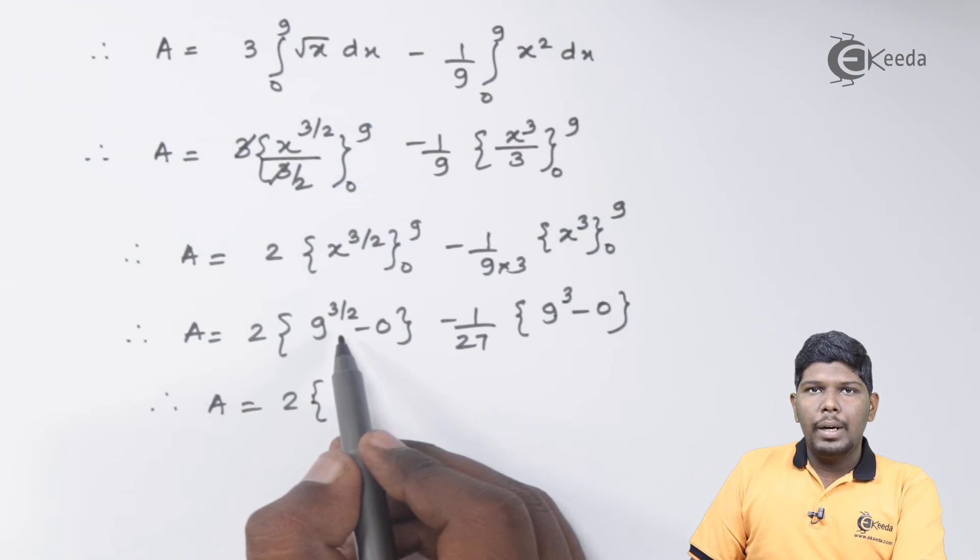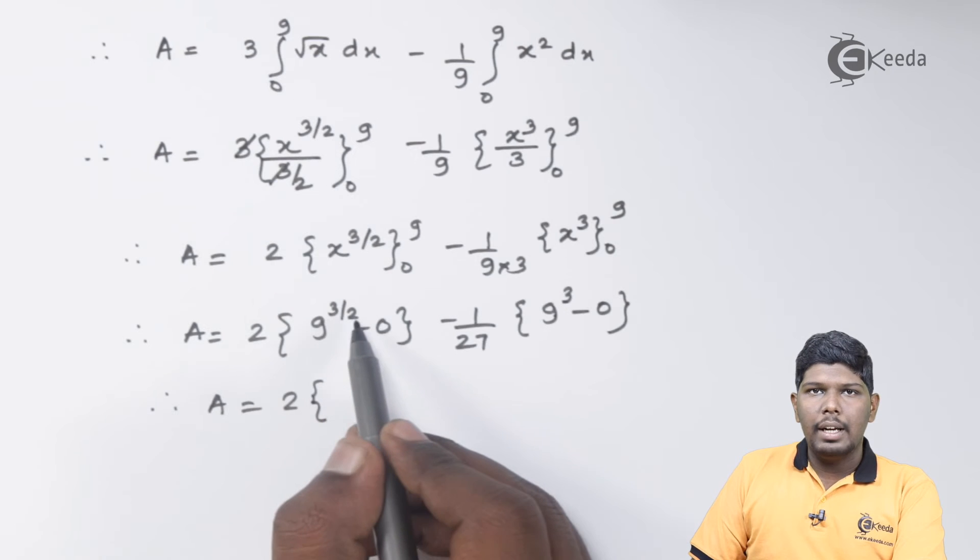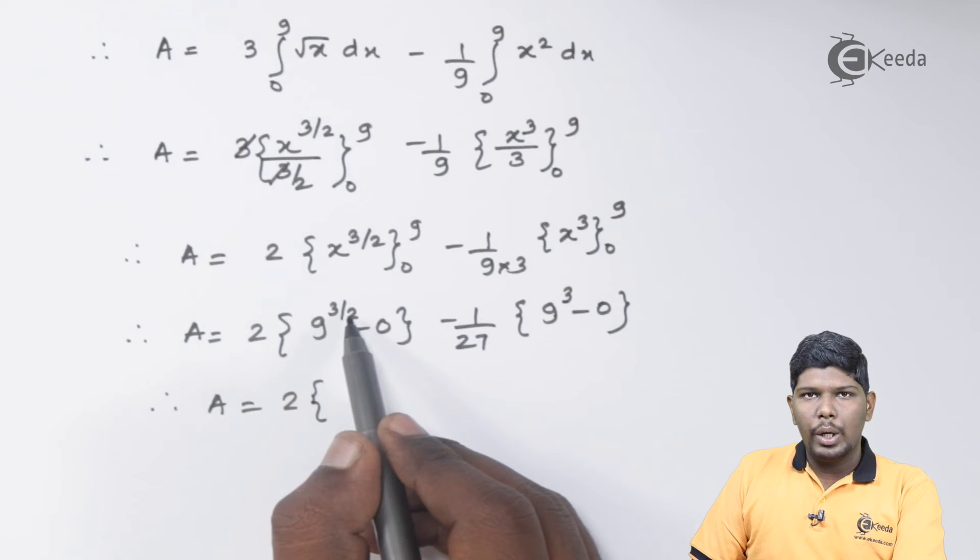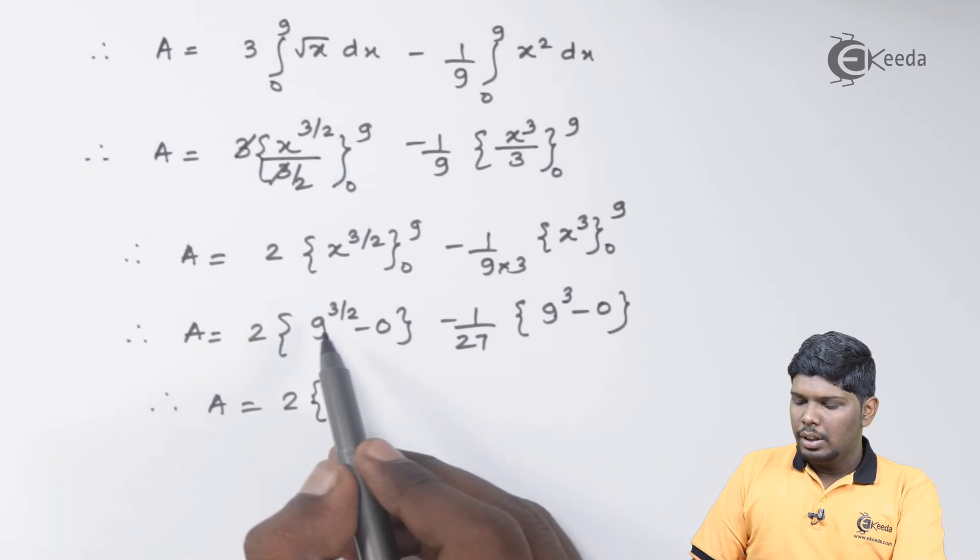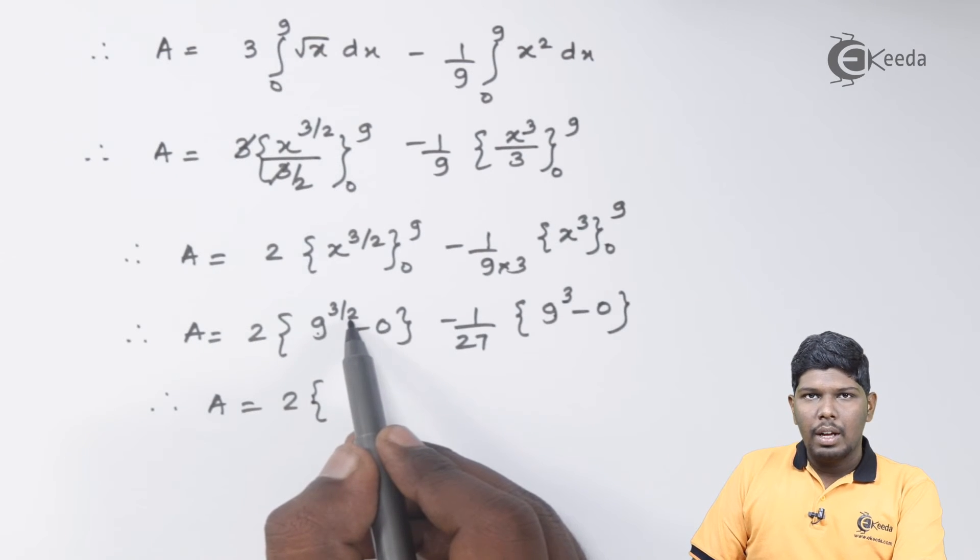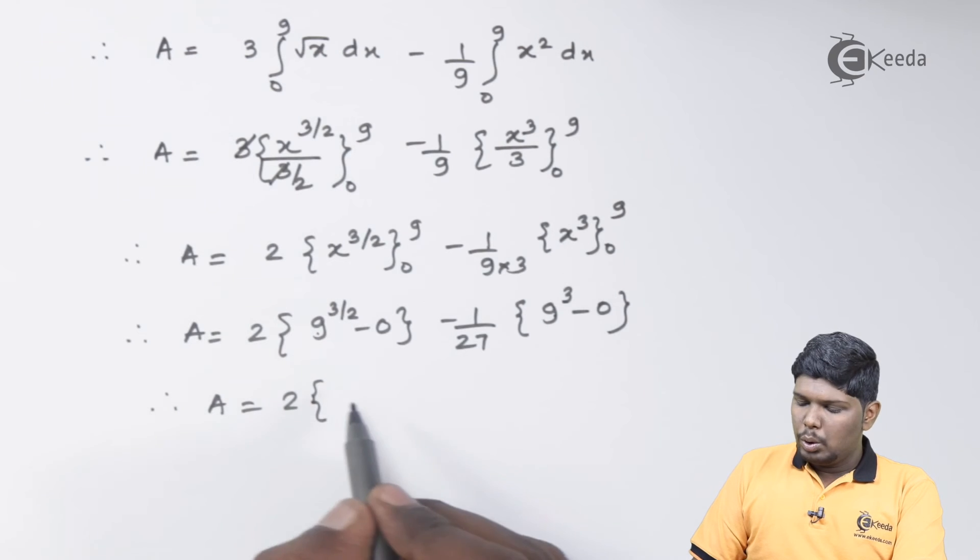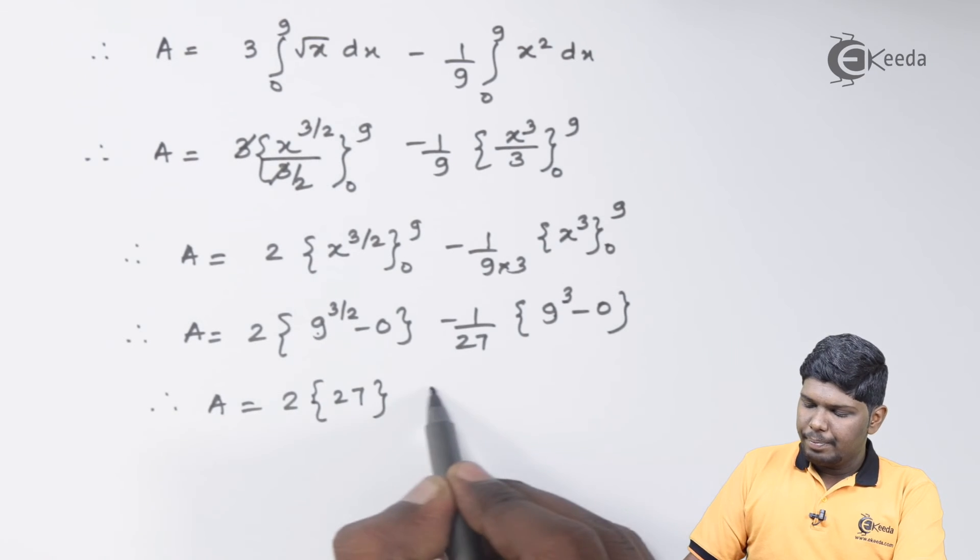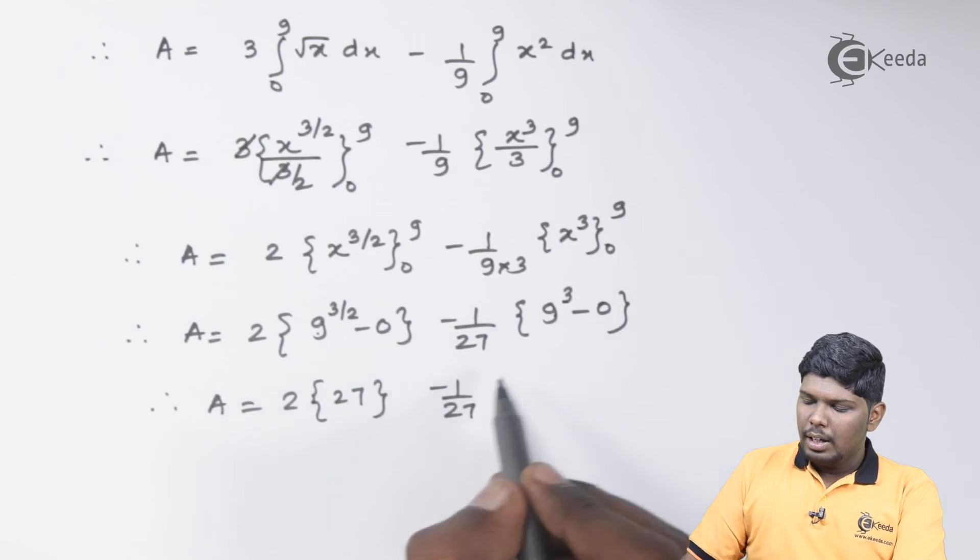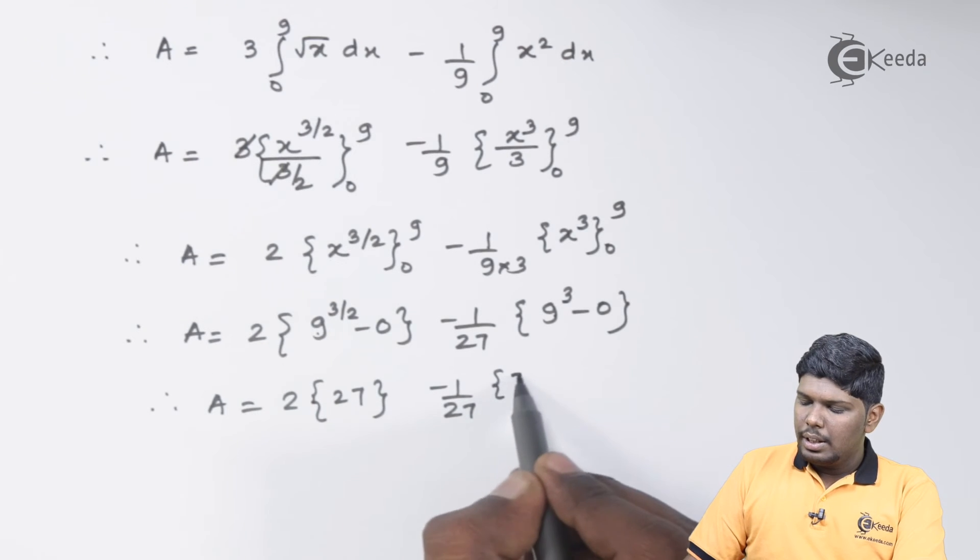To find 9 raise to 3 by 2, you can find first cube and then square root or first square root and then cube, as 1 by 2 stands for square root and 3 stands for cube. So square root of 9 is 3 and cube of 3 is 27. Here 9 cube will give you 729.